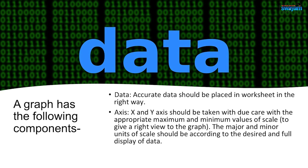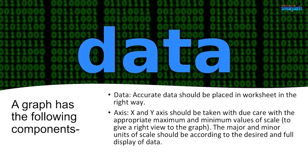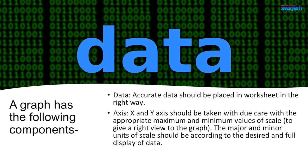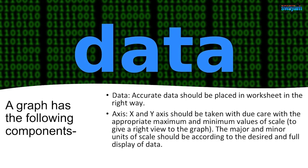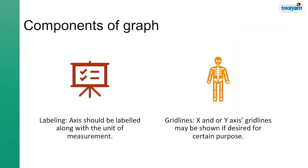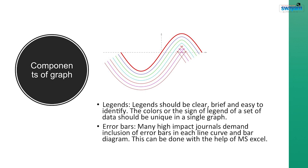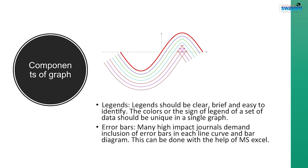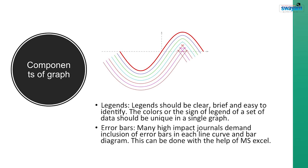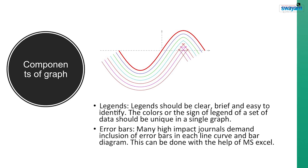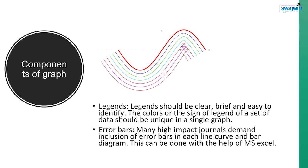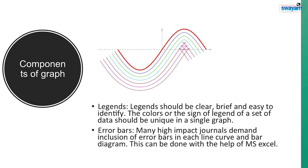A graph has the following component and all of these should be given due attention: the data, the axis with due care. Let us take a quick review on those things: data in worksheet in right way, axis taken with due care, labeling with the right unit of measurement and the title. Gridlines: X or Y axis gridlines may be shown if desired. Legend should be clear, brief and easy to identify. The colors or the sign of legend or a set of data should be unique in a single graph. The layout and positioning legend should be uniform for all graphs. Vertical layout and bottom right positioning you have to select. The last thing is error bars. Many high impact general demand inclusion of error bars in each line curve and bar diagram. This can be done with the help of MS Excel.